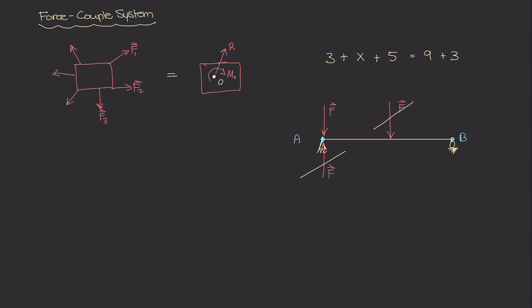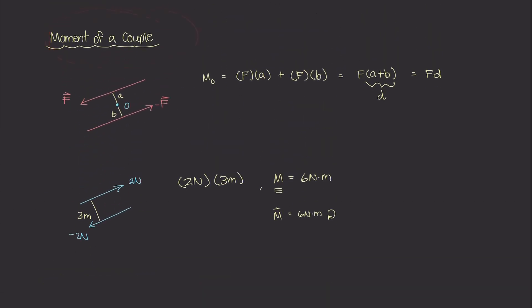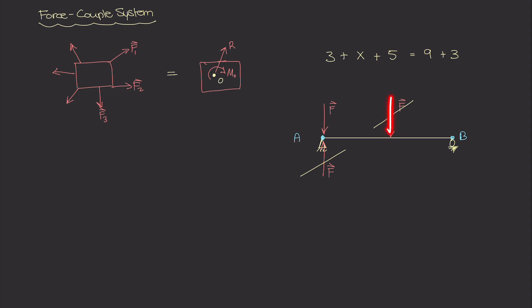Well, what is that moment? It's F times D. Remember from the last couple of videos, we talked about the moment of a couple. And we ended up with this very simple equation where if you have these two forces, they're equal and opposite and they're parallel, and there's a distance D between them. It's just going to be F times that distance D. And that's exactly what we have going on here.